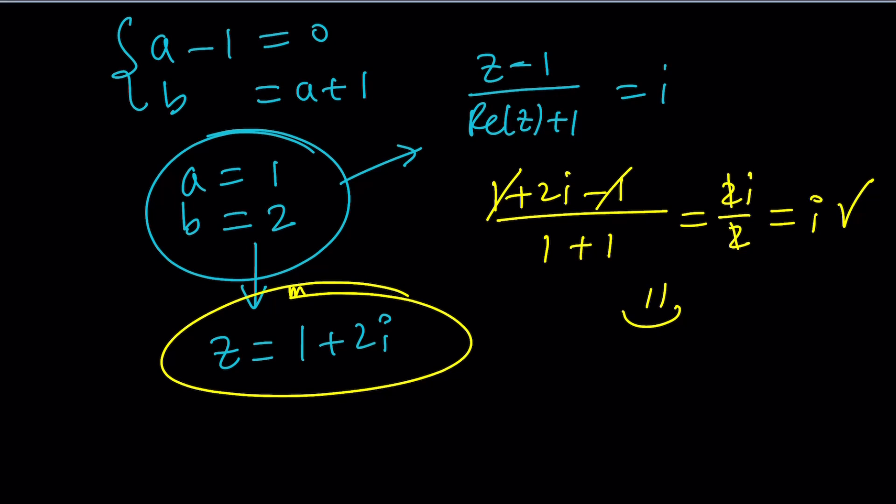So Z equals 1 plus 2I seems to be the solution, but is that the only solution? Can we find anything else? I don't think so, but let's check out what Wolfram Alpha says.